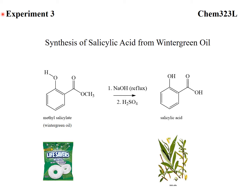This is the pre-lab discussion for experiment number three: synthesis of salicylic acid from wintergreen oil. This molecule depicted here is methyl salicylate, or wintergreen oil. It has a hydroxy group coming off the aromatic ring and it has an ester on it. If I were to heat this up with sodium hydroxide and then follow that up with a sulfuric acid workup, I can convert methyl salicylate into salicylic acid.